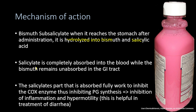The salicylic acid — also called salicylate — is completely absorbed into the blood, while the bismuth remains unabsorbed in the gastrointestinal tract. The salicylate is absorbed fully and works to inhibit the cyclooxygenase enzyme, thus inhibiting prostaglandin synthesis.